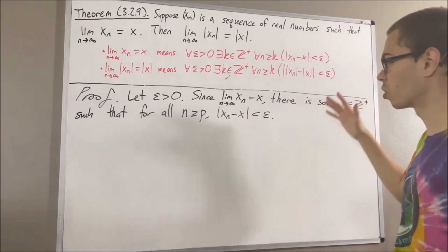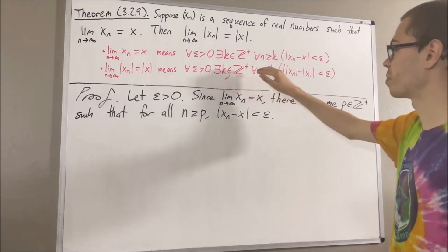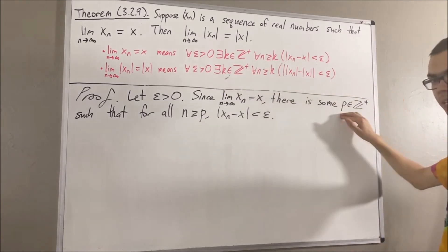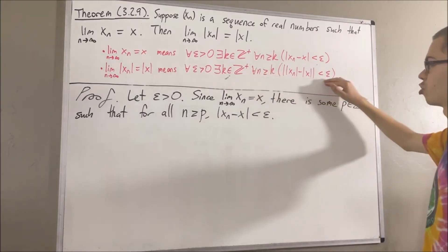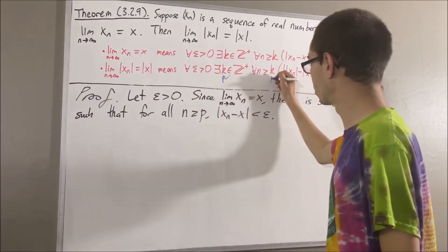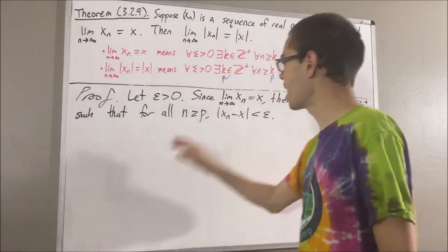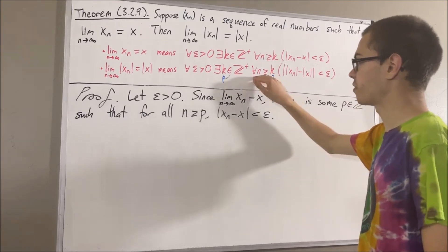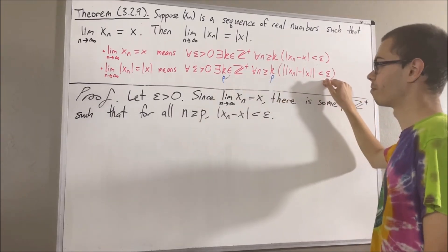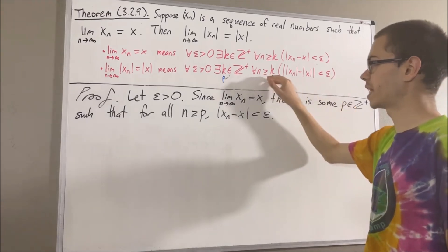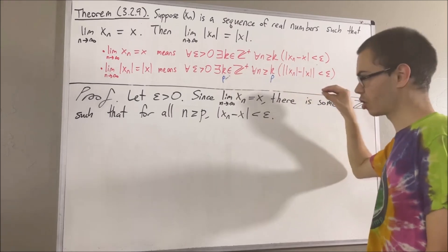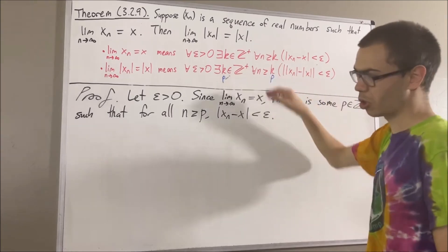Now remember, our goal is to find a positive integer which makes this statement turn out true. And our claim is that p will make this statement turn out true. So we'll take k here to be p. And we proceed to show that for all positive integers n greater than or equal to p, this is true. So since we're trying to prove a statement about every positive integer greater than or equal to p, give me an arbitrary positive integer greater than or equal to p — I'll call it n.